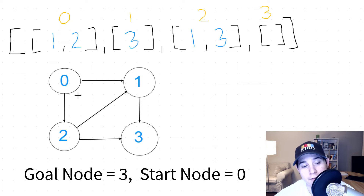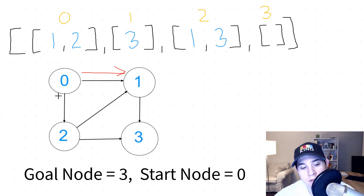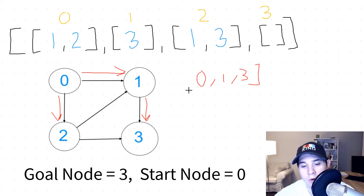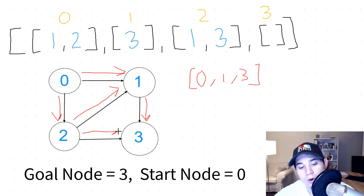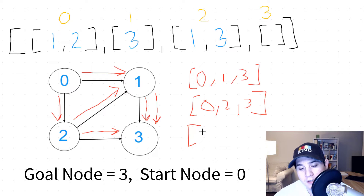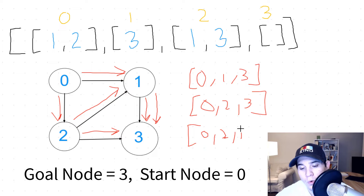Let's go over all of the paths for this graph. Starting at node 0 we want to get to node 3. From node 0 I can go to node 1 and node 2. From node 1 I can just go to node 3, so we've reached the goal — that's path 0, 1, 3. Then going to 2, we can go to 1 or directly to 3. Going 0, 2, 3 is another path. And from 2 we can also go to 1, then to 3, giving us the last path: 0, 2, 1, 3.